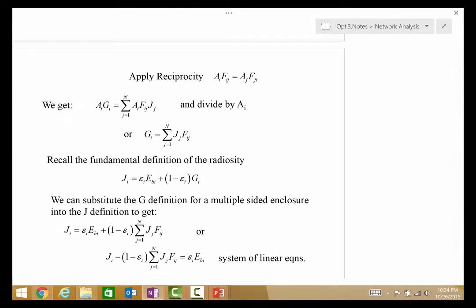Applying reciprocity allows us to divide out the AI or area of surface I. So, reciprocity for any of these surfaces says that AIFIJ is equal to AJFJI. So, when we had the AJFJI over here, we simply substituted AIFIJ for it and we divide by AI.